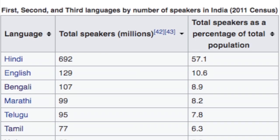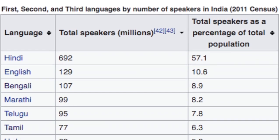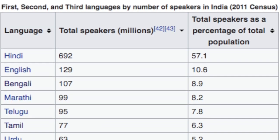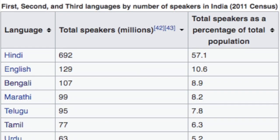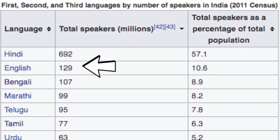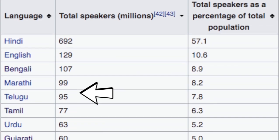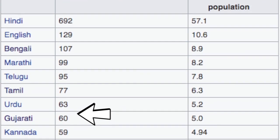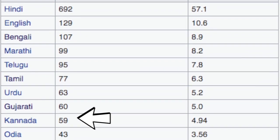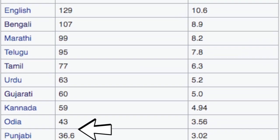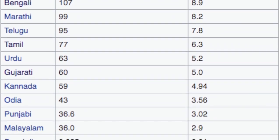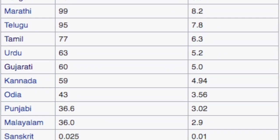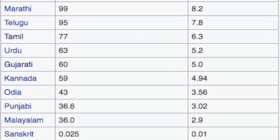Going down the list from a 2011 national census, the 12 most widely spoken languages in India are Hindi, English, Bengali, Marathi, Telugu, Tamil, Urdu, Gujarati, Kannada, Odia, Punjabi, and Malayalam — all going by the number of people who speak these languages, native or otherwise.